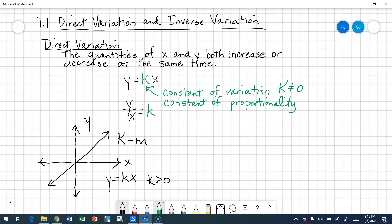And if x is 0, then y would have to be 0 as well. Because 0 times k would be 0, so y would be 0.